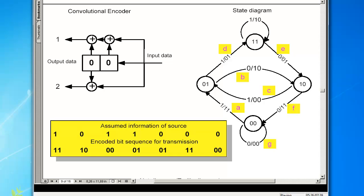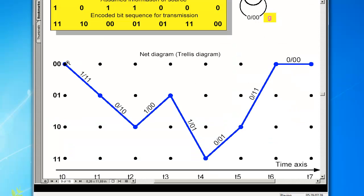On the other hand, the trellis diagram can describe the cause of the state sequence and the output signals for a specific input bit sequence.